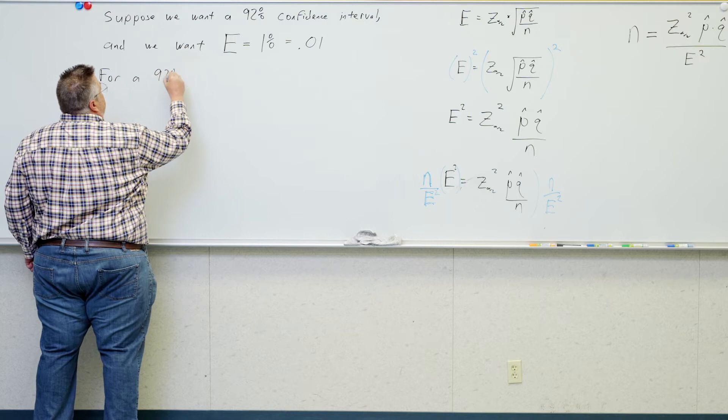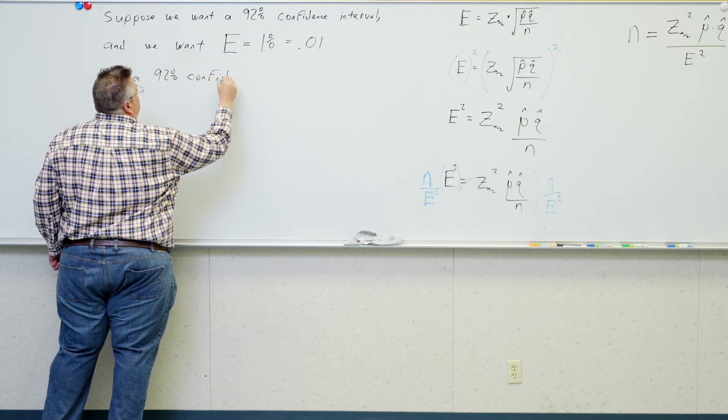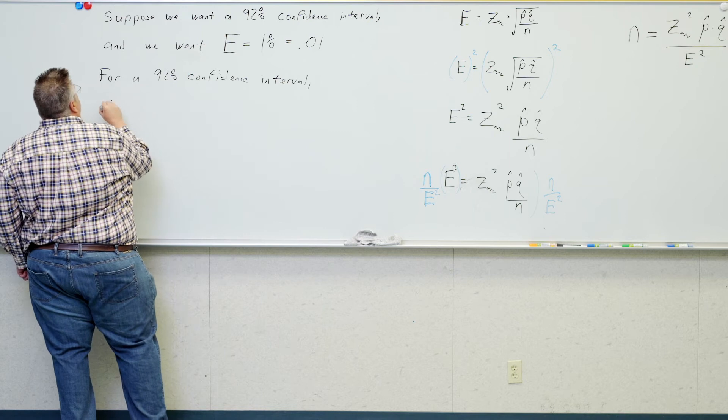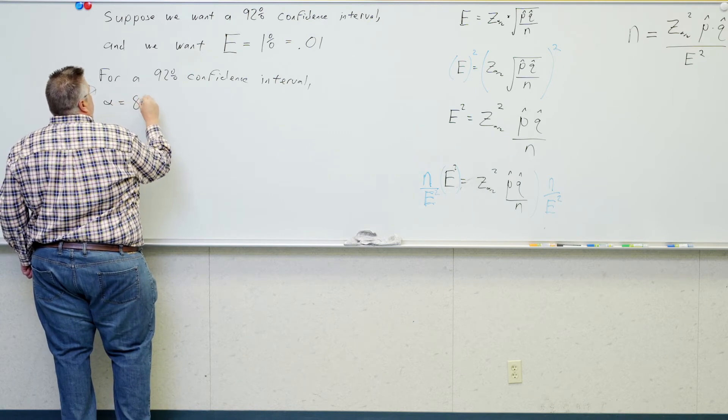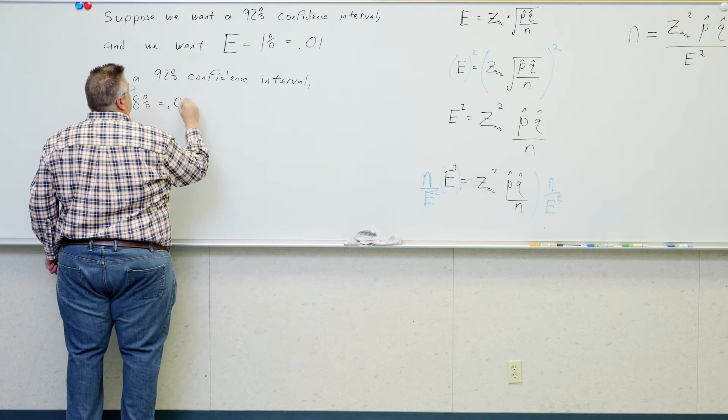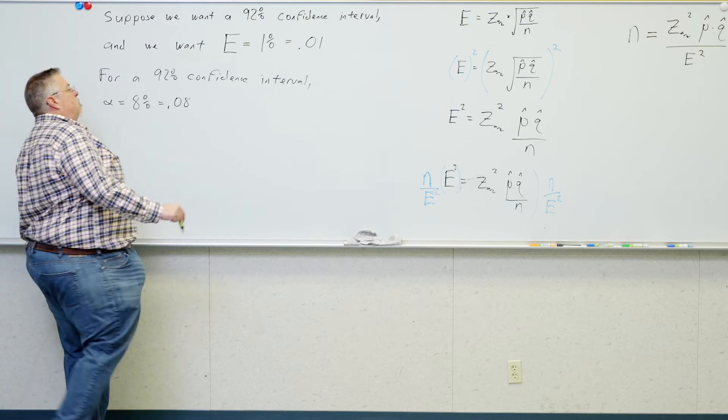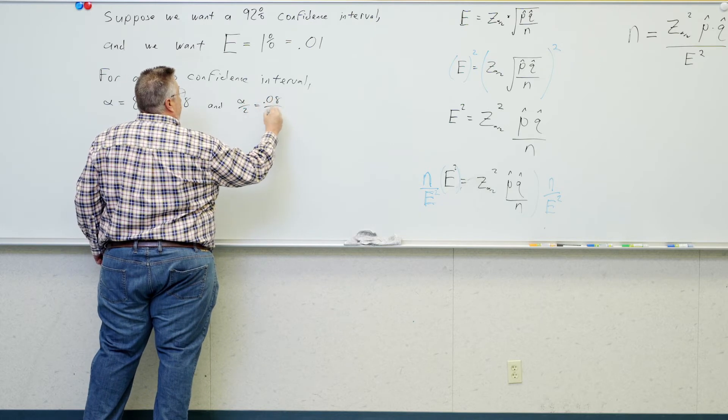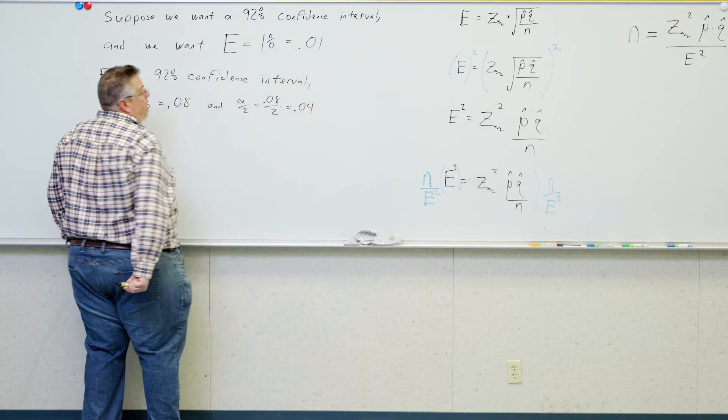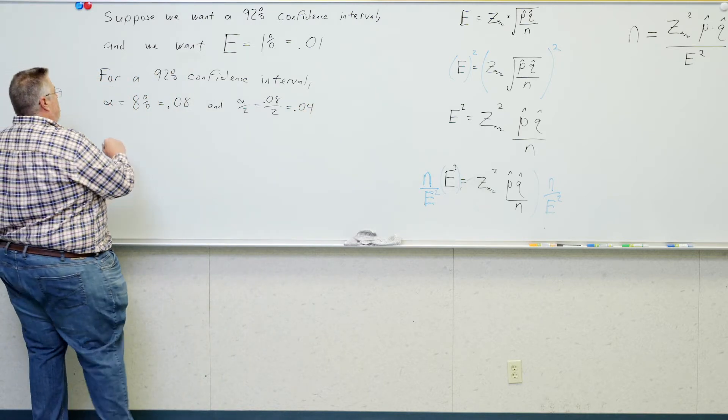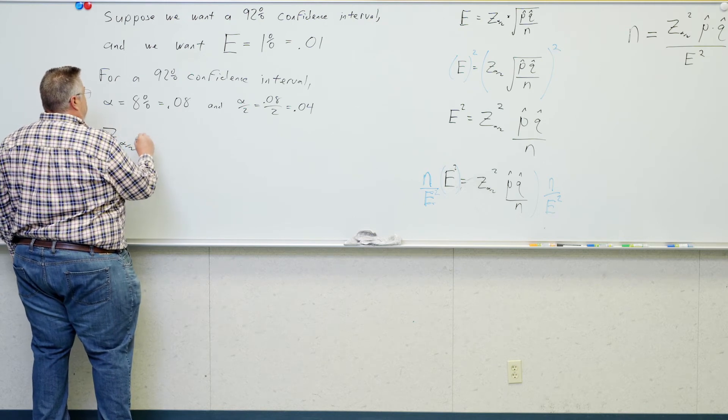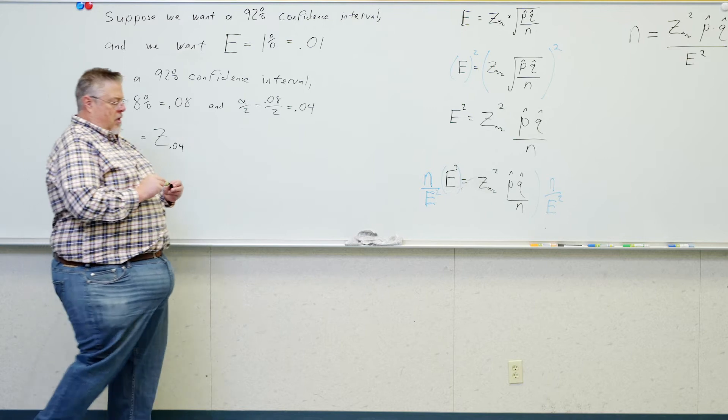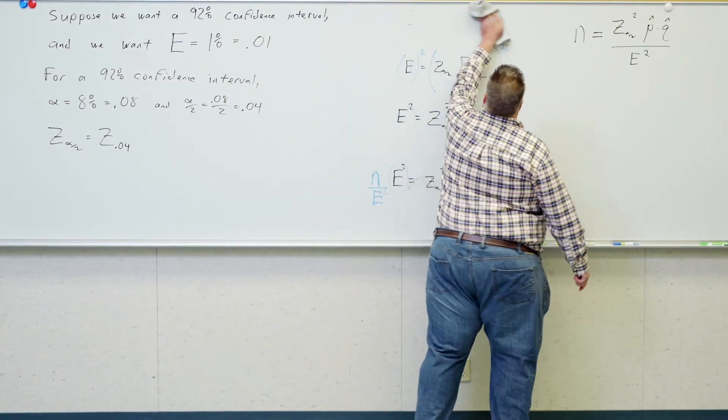For a 92% confidence interval, the probability of being wrong is 8%, which is .08. And alpha over 2 then, .08 over 2, is .04. So, z of alpha over 2 becomes z of .04. I want the z score that leaves 4% in each tail.